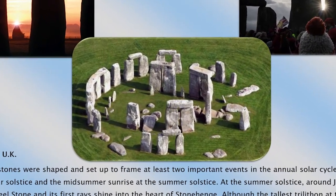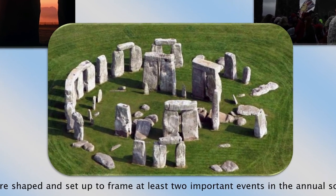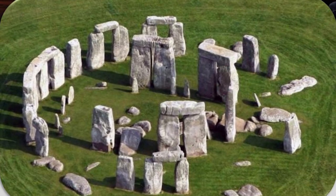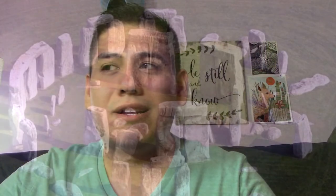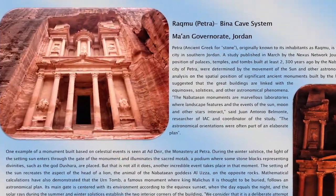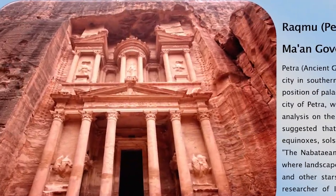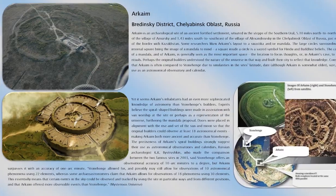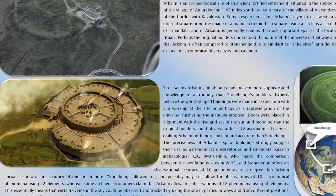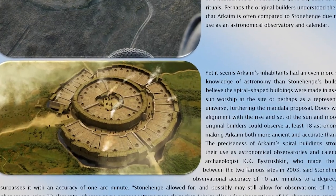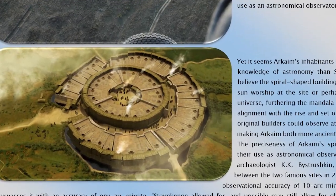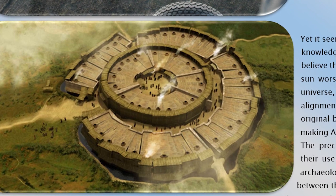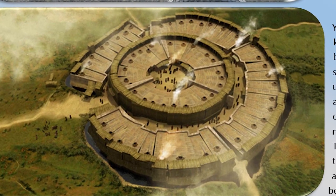Stonehenge, which we've already discussed as a solstice tracker, is also an equinox tracker. Similarly, Petra is aligned to both equinoxes and solstices. Arkhaim is another site aligned to both solstices and equinoxes, and it's probably the most sophisticated timekeeper we know of besides Stonehenge — amazingly precise in its ability to keep track of time across several different events throughout the course of the year.